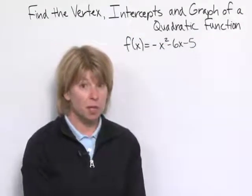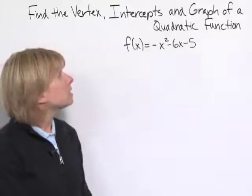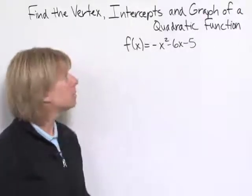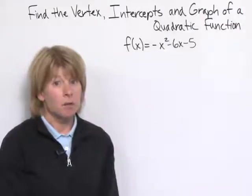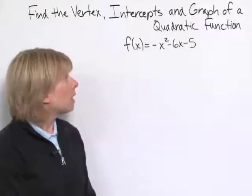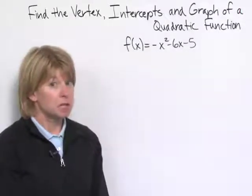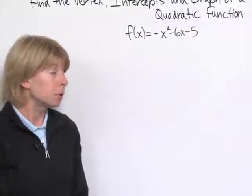So here's our quadratic function that we want to graph: f(x) = -x² - 6x - 5. Notice that it's in the form that the hint suggested. When the function is written in this form, we can find the vertex and the intercepts pretty easily.